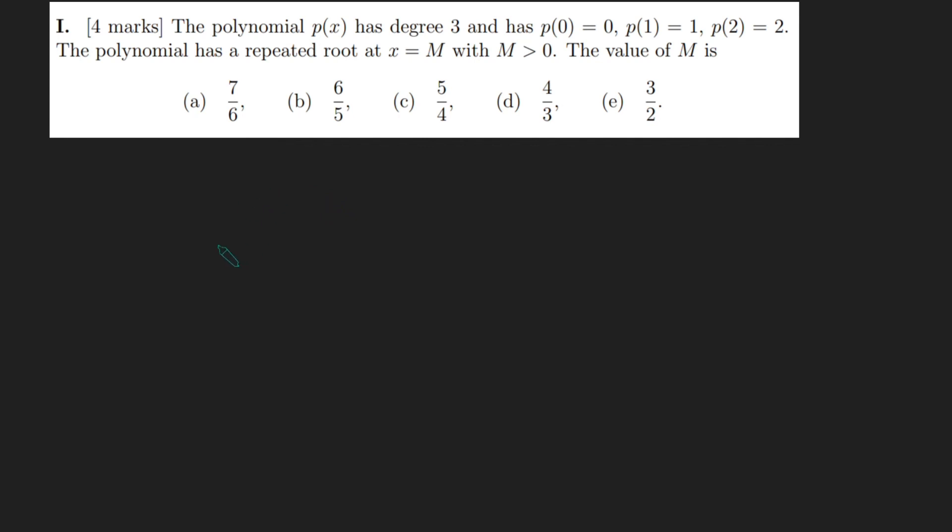To solve this, we're going to start with the fact that p of x is degree 3, so p of x is a cubic. I'm going to think about how I would factorize p of x. We know that p of x has a root at 0 because p of 0 equals 0, and so that means I can take out a factor of x from p of x.